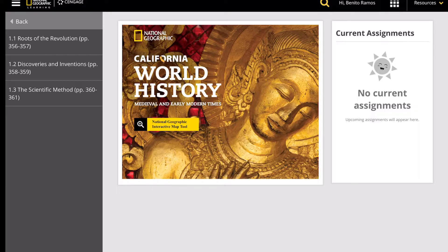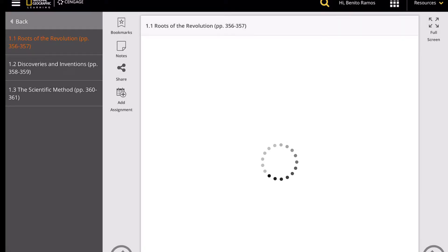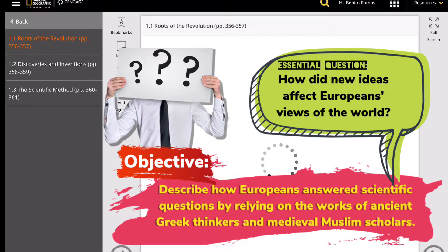So revolution is not always violent and bloody. Today we'll learn about this type of revolution that is more of an intellectual type of revolution, and it radicalizes not people to arms, but it radicalizes ideas that eventually change the way people think and approach the world or life in general. So for the essential question, the chapter's essential question is how did new ideas affect Europeans' views of the world? And the objective of this lesson is to describe how Europeans answered scientific questions by relying on the works of ancient Greek thinkers and medieval Muslim scholars.